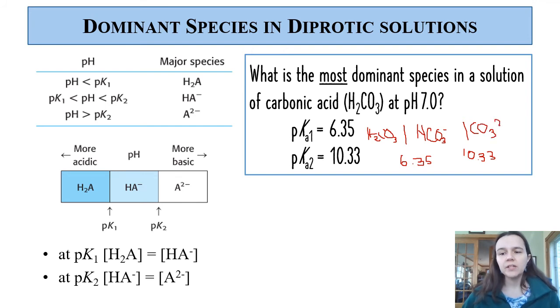To answer it, what I would do is then point to where pH 7 is approximately, which is right there, and find that the most dominant species in that case is going to be our HCO3-.